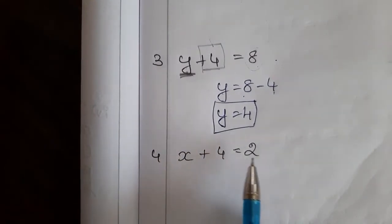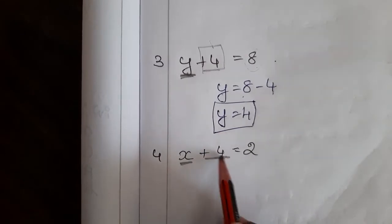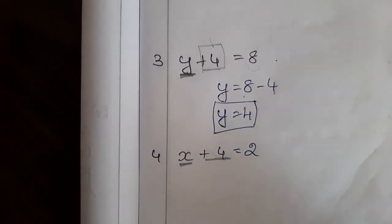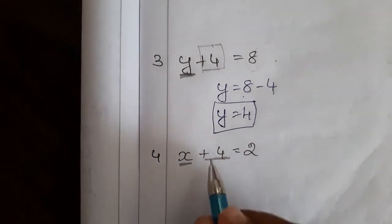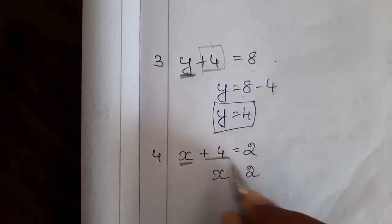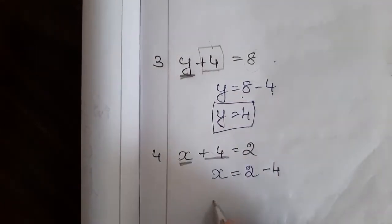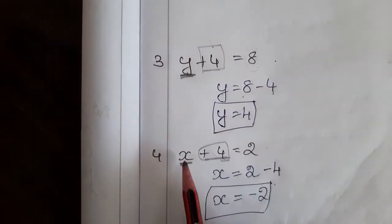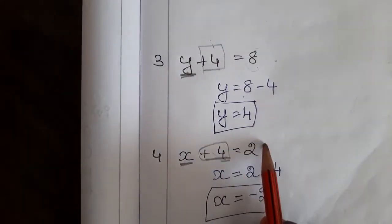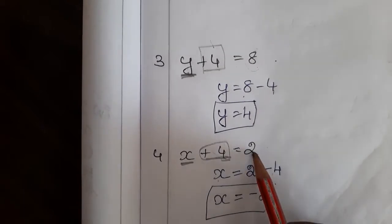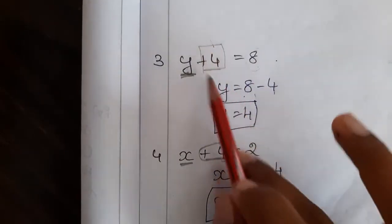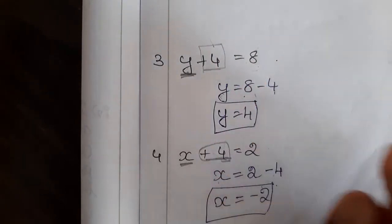Next problem: x plus 4 is equal to 2. Here also the variable is x, that is what we have to find. Let me transpose this plus 4 to RHS. Plus 4 is now in LHS — it will transpose to RHS. If you transpose, plus 4 will become minus 4. Only x will be remaining in LHS. So x is equal to 2 minus 4, which is minus 2. Only we are transposing this plus 4 to that side — the other terms remain in the same side.